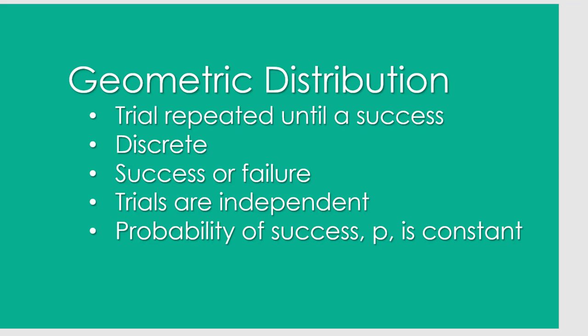In geometric distribution, it's something that we see a lot, and the common example is how many shots will a basketball player have to take until they hit a basket. So you're repeating a trial until you get a success. It is discrete because they're all individual countable items. We're looking at success or failure.